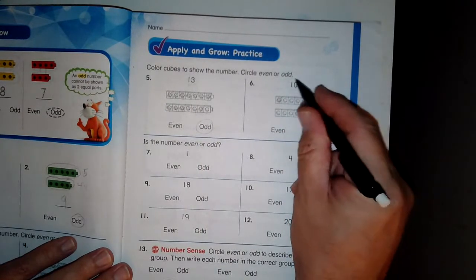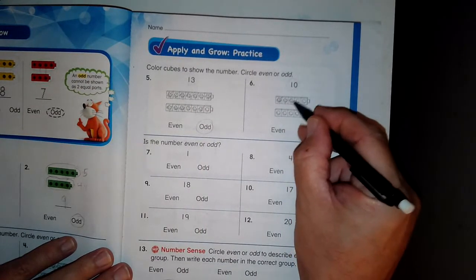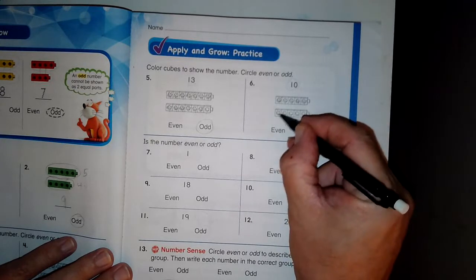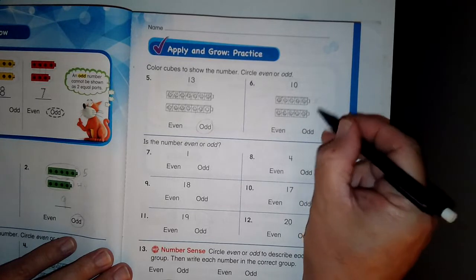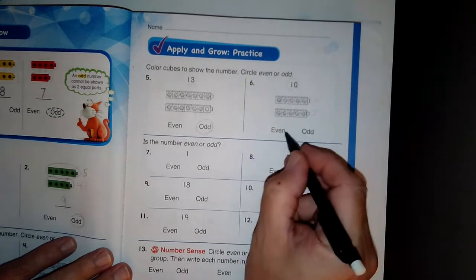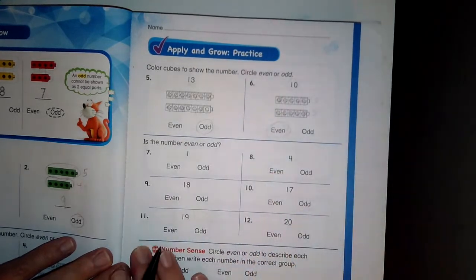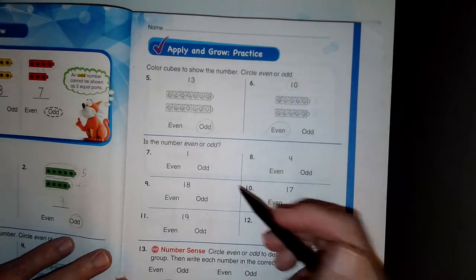The next number is ten. One, two, three, four, five, six, seven, eight, nine, and ten. I know that five and five makes ten. That is an even number, two equal groups.